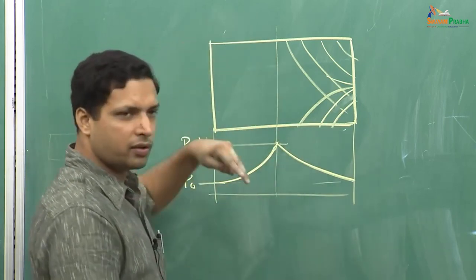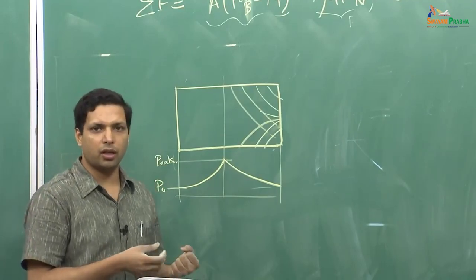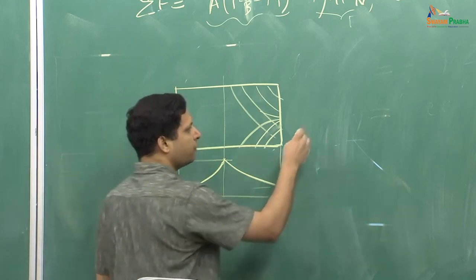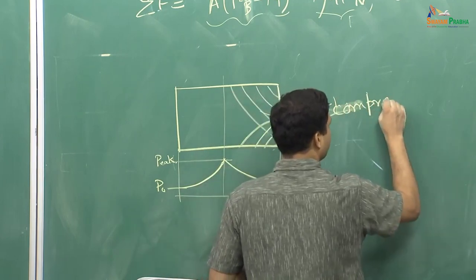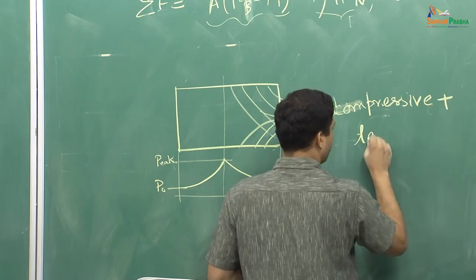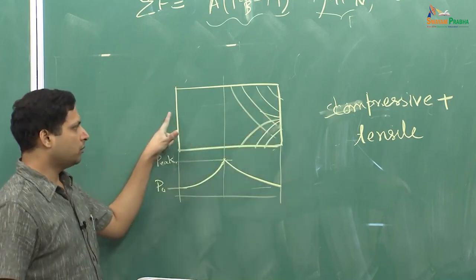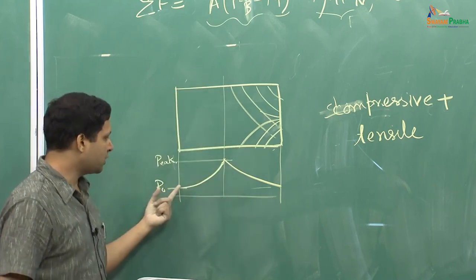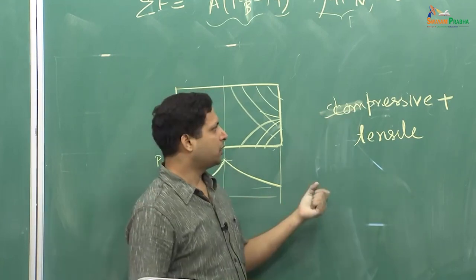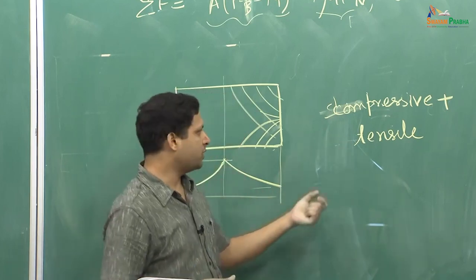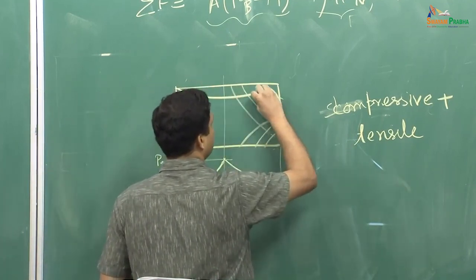Because of these two directional pressures — one from the surface and one from the side — there is a variation in the pressure. Also, once you press it and then relax, the material tries to come back to its original shape, it relaxes a little bit. Because of this phenomenon and the fact that there is shearing — compressive plus tensile stresses — the two effects add together and lead to a shearing phenomenon.